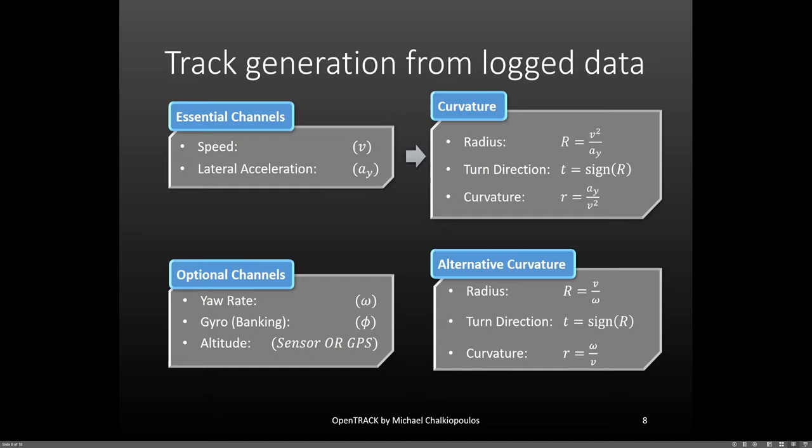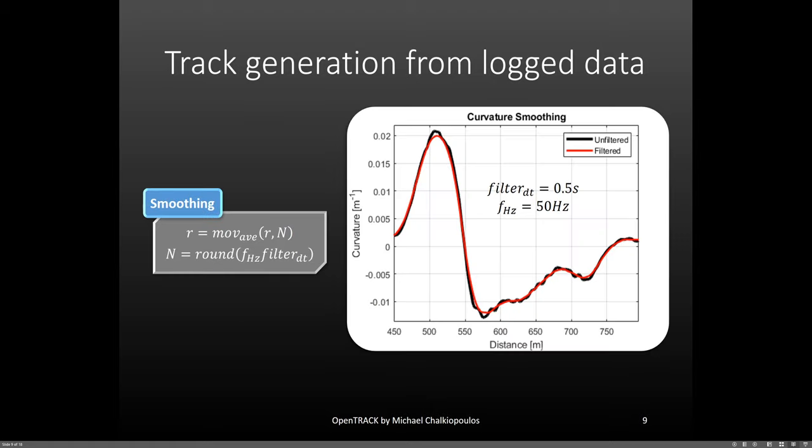When using yaw velocity, the equation that gives us the turning radius and curvature is now linear velocity over yaw velocity.